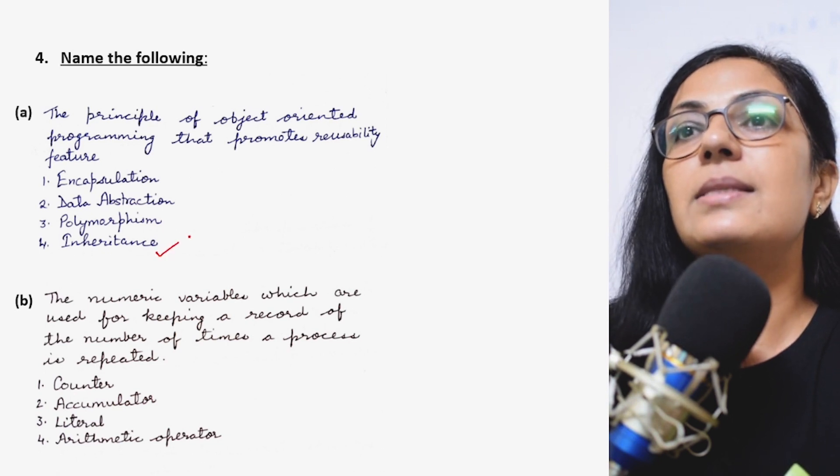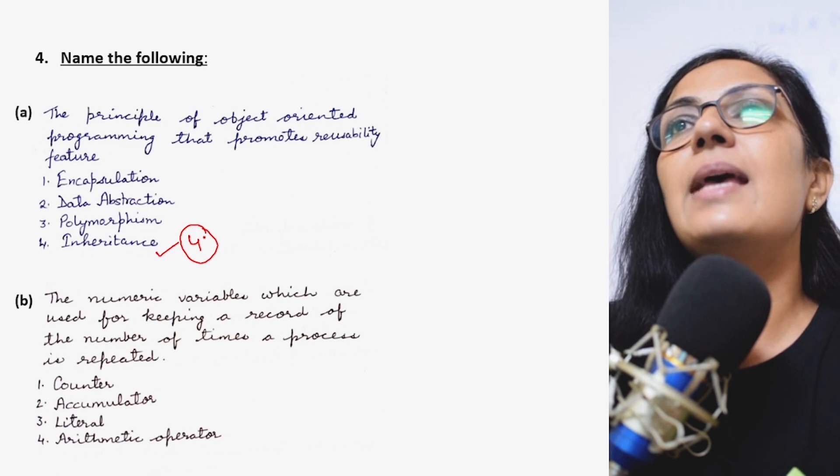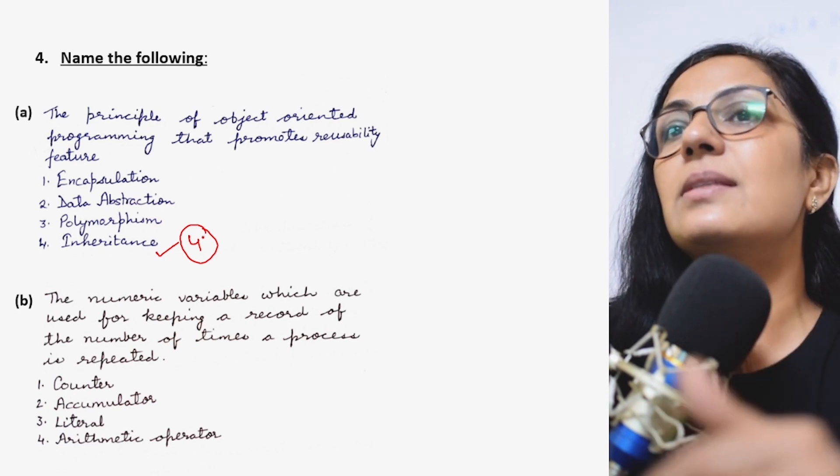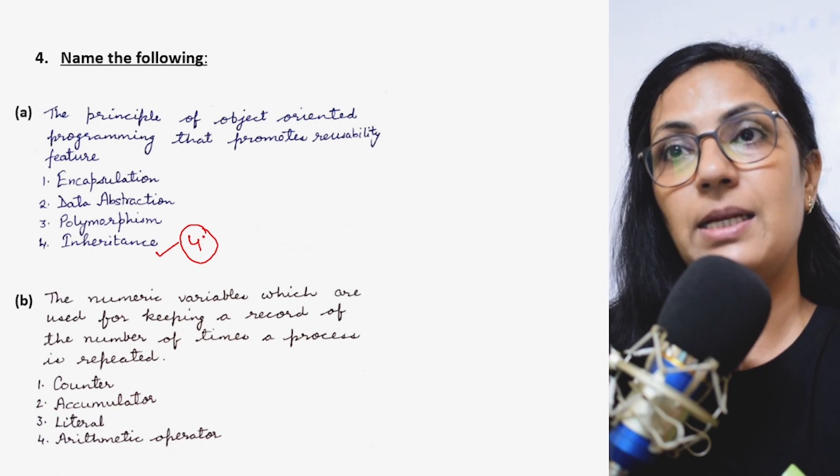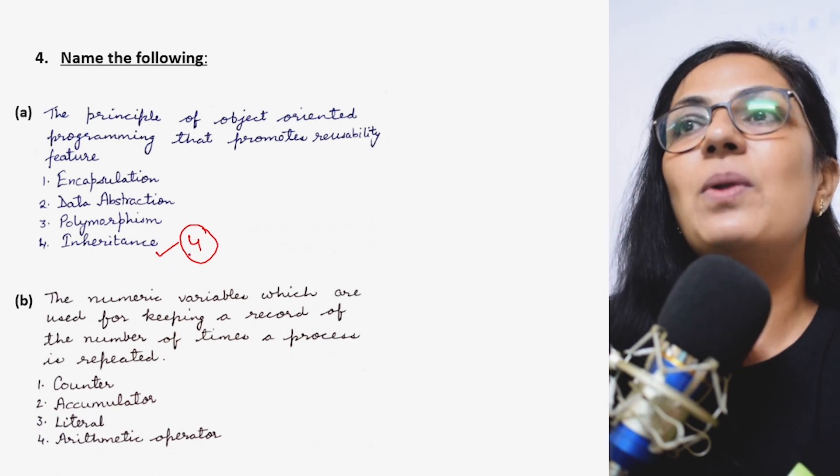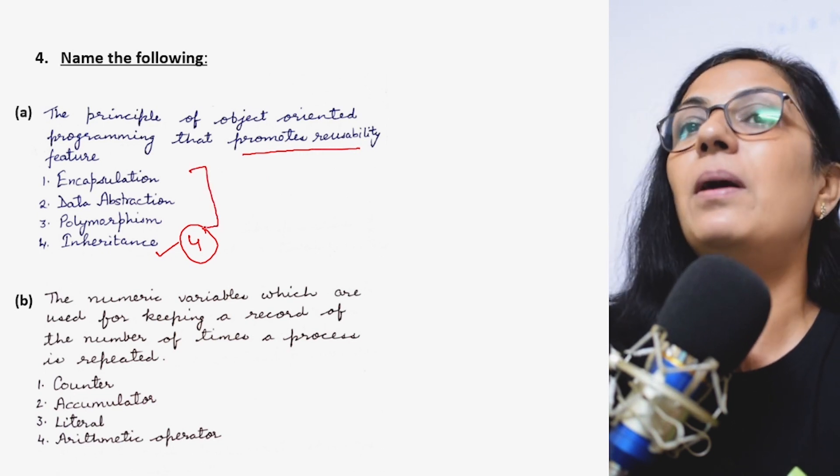Data abstraction is hiding. Polymorphism means more than one function with different purpose. And inheritance, yes, inheritance is the correct answer. When you have already created a class and its base classes or the subclasses can reuse the features which are of parent class. So inheritance promotes reusability. Children, please learn the definitions, the purpose of all these principles.